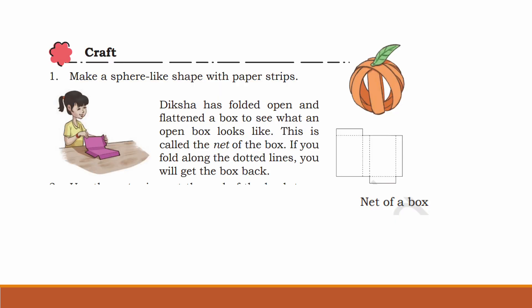Make a spear-like shape with paper strips. You can use some paper strips to make a spear-like shape like this. Diksha has folded, opened and flattened a box to see what an open box looks like. This is called the net of the box. If you fold along the dotted lines, you will get the box back. That is called a net of a box.